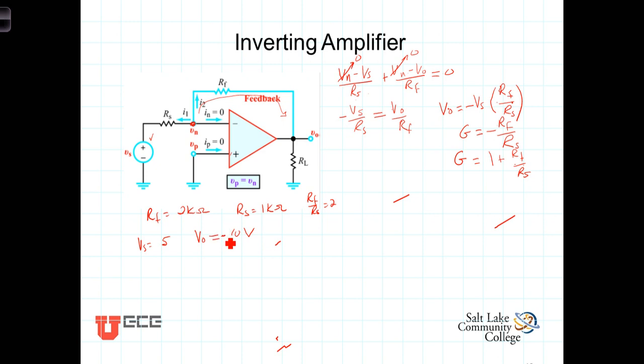What about time varying voltages? What if our V source was equal to, say, five cosine of omega t? What would the output voltage be? Well, V out would be negative two times five times the cosine of omega t, or that's equal to negative ten cosine of omega t.